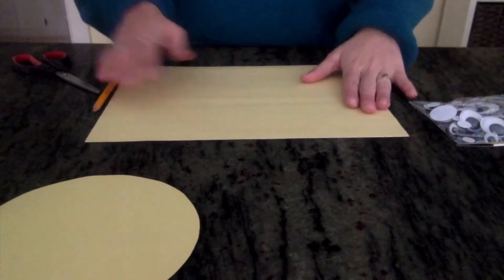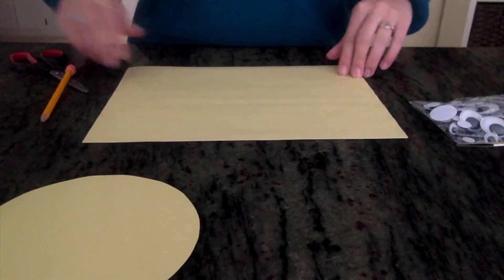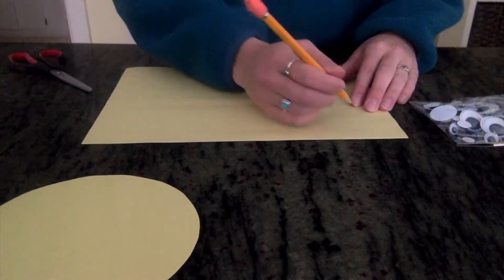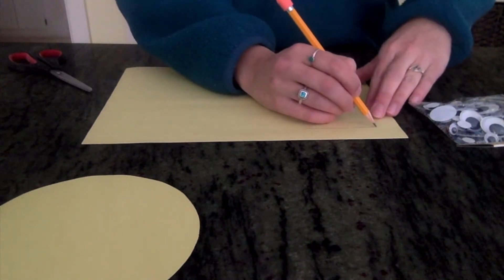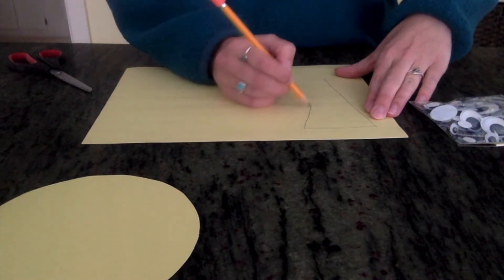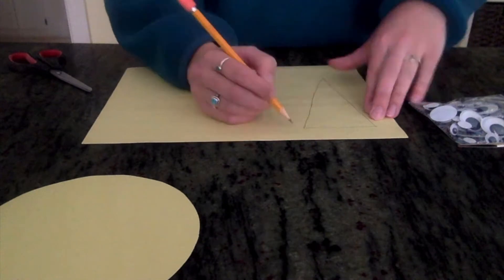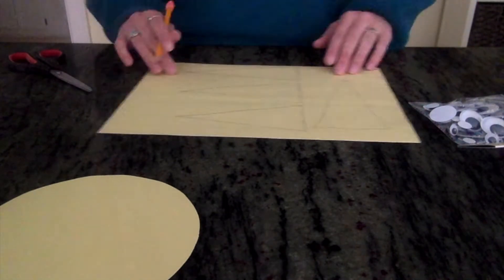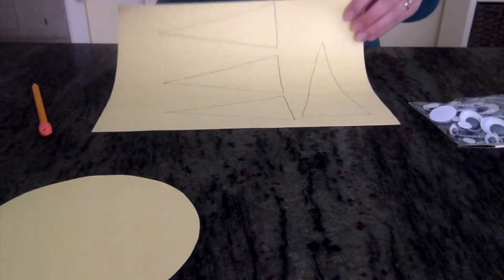Next, we're going to use another piece of paper and we're going to make our rays for the sun. So we're going to need 12. We're going to draw them out and then again we're going to cut them out.